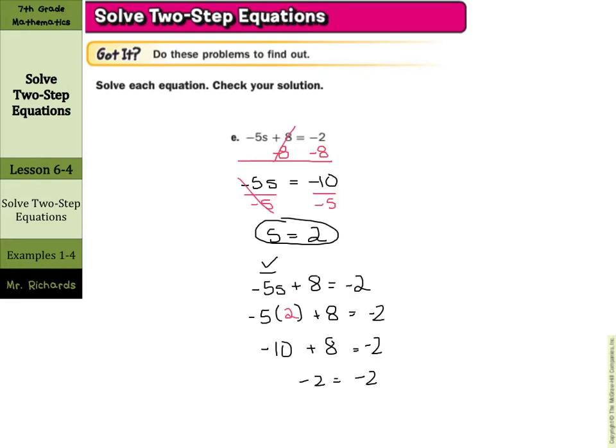Well, here's our finished work. We subtracted 8 from both sides, and we're left with negative 5s equals negative 10. Then we divided by negative 5 on both sides, and we're left with s equals a positive 2, since a negative divided by a negative is a positive. To show our check step, we substitute in 2 for s, and you can see as this checks out, negative 2 equals negative 2 at the end, so s equals 2 is our solution.